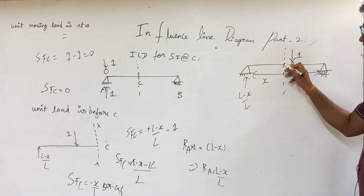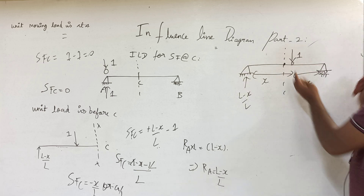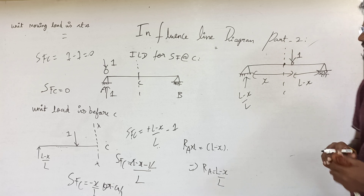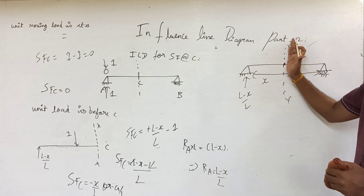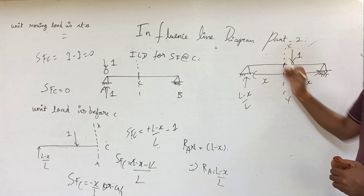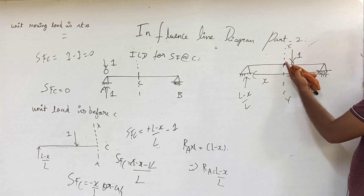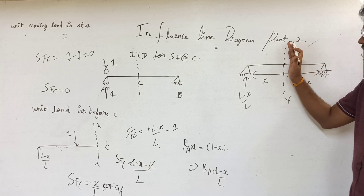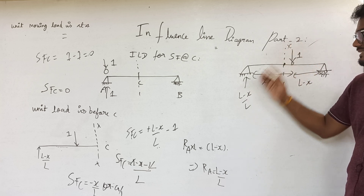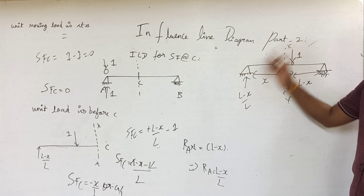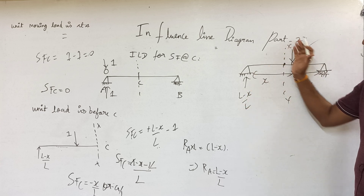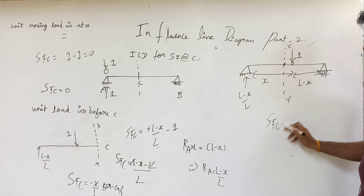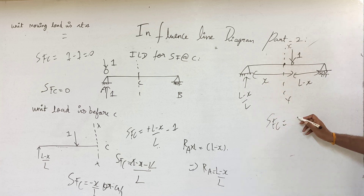Now we calculate shear force at section C. We look at forces from the left side. On the left side of the section, the unit load has crossed point C. The force acting on the left side is the reaction in the upward direction. So shear force at C equals positive (L minus x) by L.